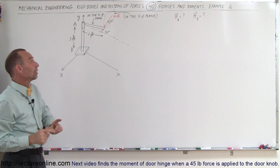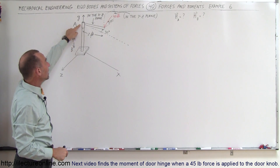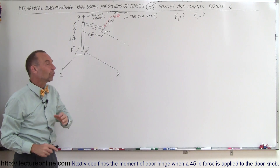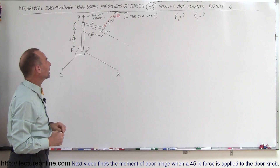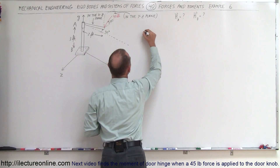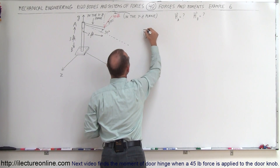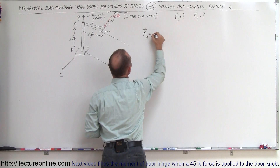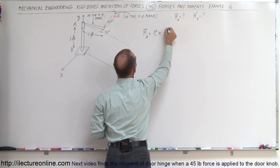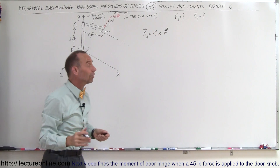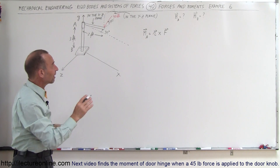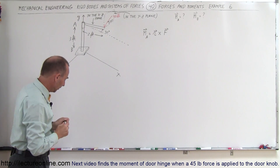What we're trying to do here is find the moment about point A and the moment about point B. Let's start with the easier one — the moment about point A. The moment about point A is simply going to be the position vector multiplied times the force vector. So what we need to do is find the components of the position vector and find the components of the force vector.